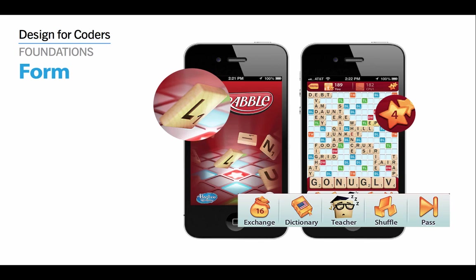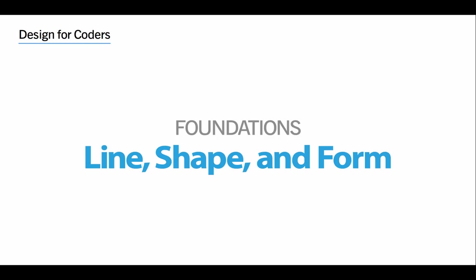When we go to something like the Scrabble app, you can see forms. The icons at the bottom have dimension — they're actually more complex than simple geometric shapes, but they can be broken down. For example, the exchange icon, which is a bag full of tiles, might be made up of circles and rectangles, whereas the dictionary icon is really just a rectangle — but they all have dimension, and that's what makes them forms.